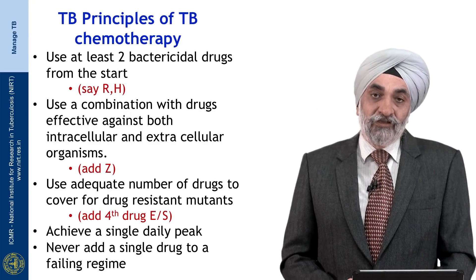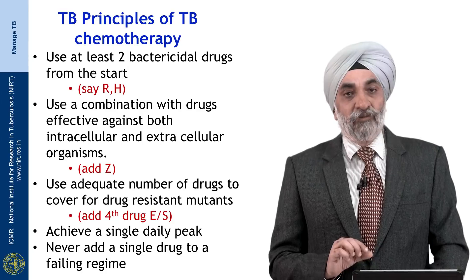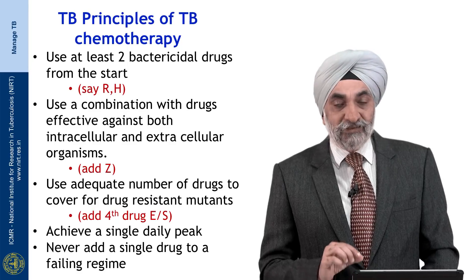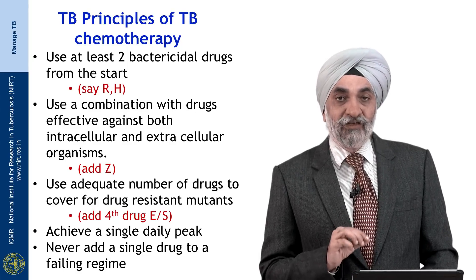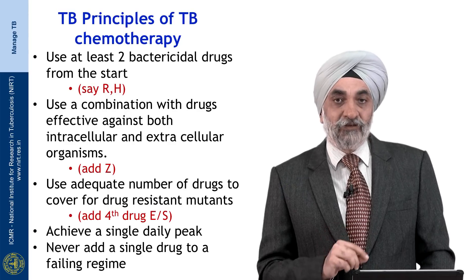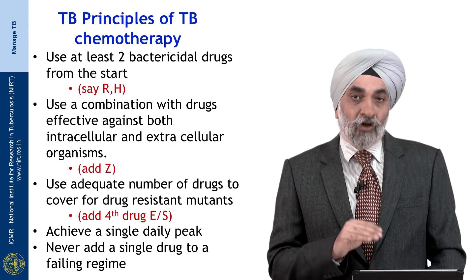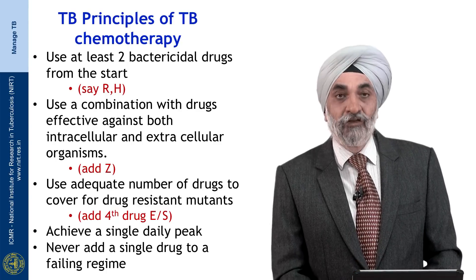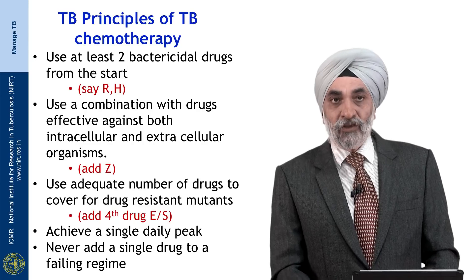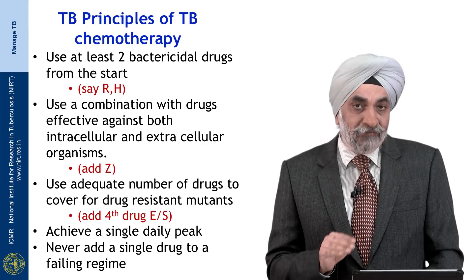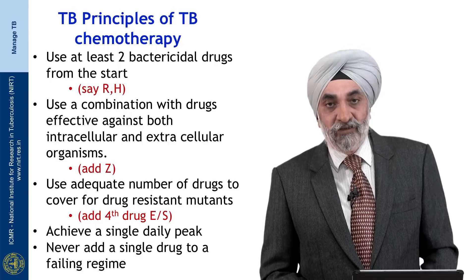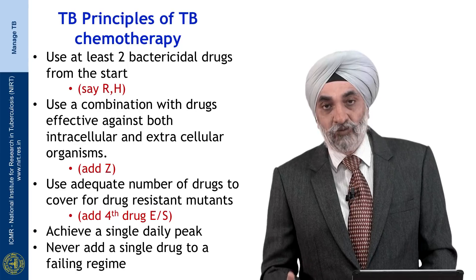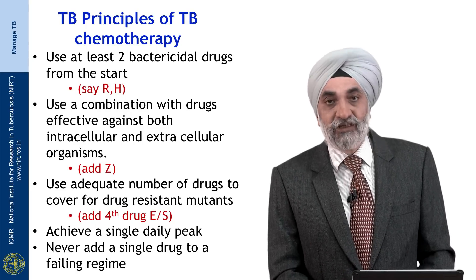Also important: Mycobacterium tuberculosis divides in about 17 to 20 hours, and as noted, it is killed only when it is dividing. So you need a single daily peak dose — there is no benefit to splitting anti-TB drugs into more than one dose per day. Equally important, if you have a failing regimen, never add a single drug, because you would then have a mutant population not receptive to that drug and you may amplify resistance in that situation.